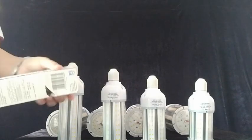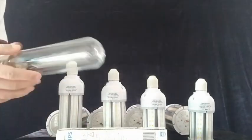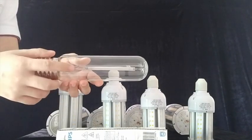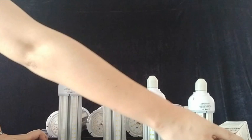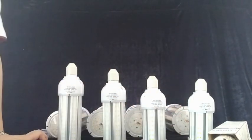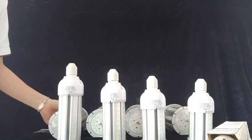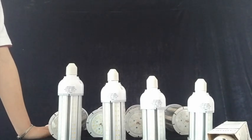Here you can see these corn bulbs are mainly for traditional HID replacement. This is the Philips zone 100 watt. We can produce from 12 watts to 54 wattage and it can replace from 70 to 250 metal halide lamp or high pressure sodium.